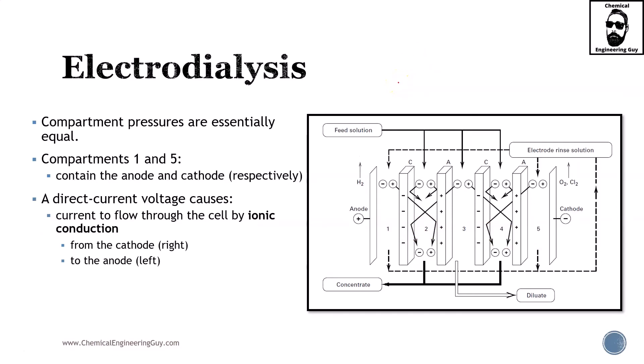Compartment pressures are essentially equal through all the system, and these operate at standard conditions. Typically, compartment one and five contain the anode and cathode. One of the simplest arrangements is as follows: you have the anode, the compartment, you got the cells, you got the concentrate two, you got the dilute three, concentrate four, and dilute five.